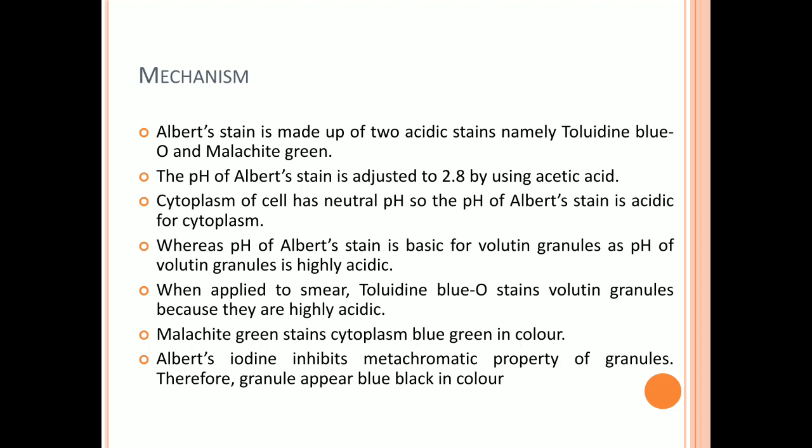When applied to the smear, toluidine blue stains volutin granules because they are highly acidic. Malachite green stains the cytoplasm blue-green in color. Albert's iodine inhibits the metachromatic property of the granules; therefore, the granules appear blue-black in color.